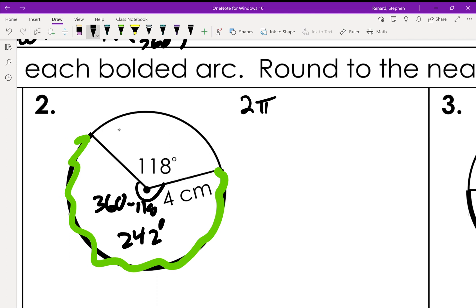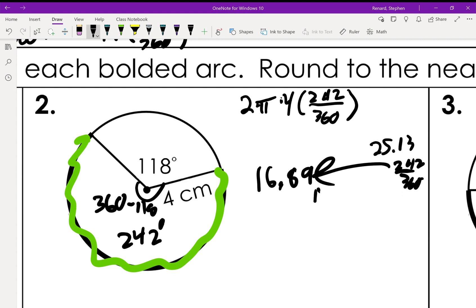So we got 2 times π times 4 times 242 divided by 360, and that gives me 16.894. So keep in mind what we're doing: if I just wanted the entire circumference, I'd go 2 times π times the radius, which in this case would give me 25.13. But I don't want the full thing. I only want 242/360 of it, so I multiply those two together. And that's what's giving me 16.89 centimeters.